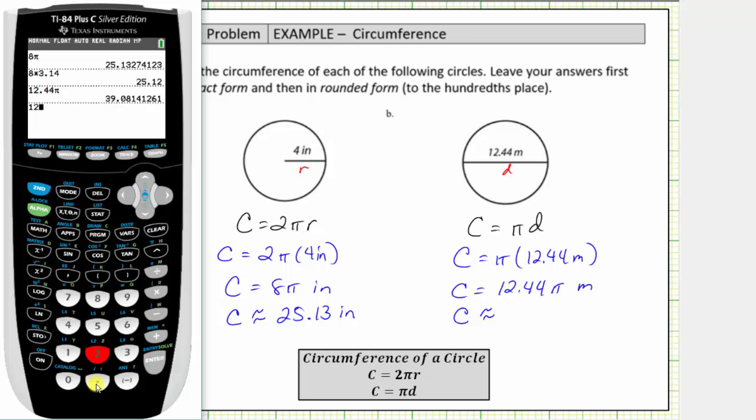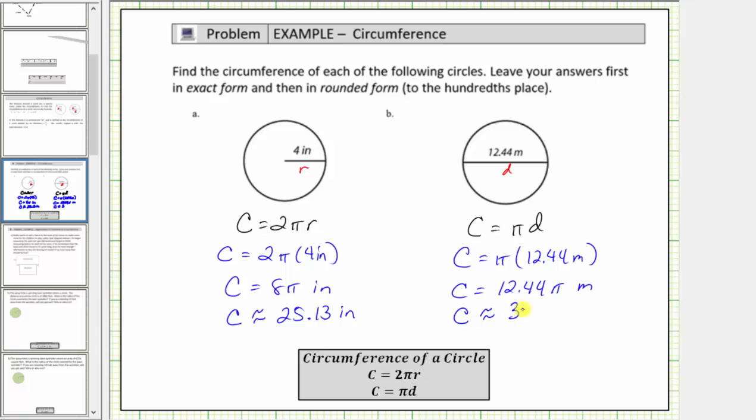And if we enter 12.44 times 3.14, notice how we get approximately 39.06. I'm going to use the more accurate approximation of 39.08. But if your directions do say use 3.14 for π, make sure that's what you enter on your calculator.